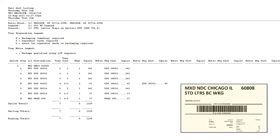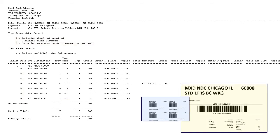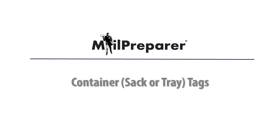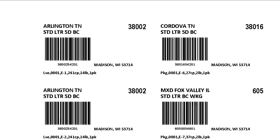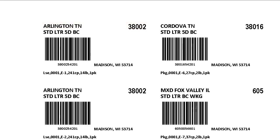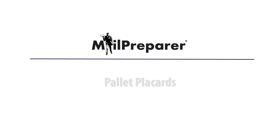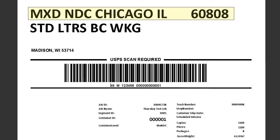Pallet placards and container labels for trays and sacks will match these details as well. Like the United States Postal Service Qualification Report, using container tags for sacks or trays and pallet placards are also a requirement. The container tags, also referred to as sack or tray tags, indicate to the United States Postal Service where the contents of the container are ultimately destined. Additionally, the tags will display the pre-sorted contents of the mail inside the container and summary information including container number, packages, and copies.